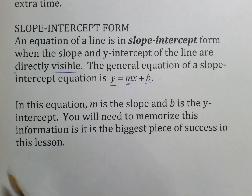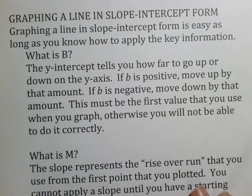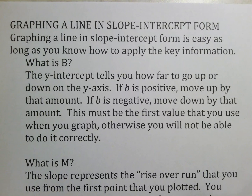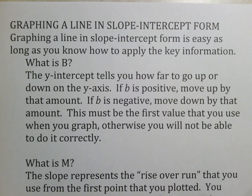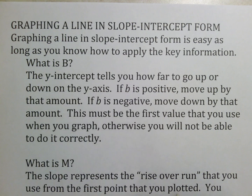You need to memorize that — it is the biggest piece of success in this lesson. Graphing a line in slope-intercept form is easy as long as you know how to apply the key information. The first piece of key information is: what is b?